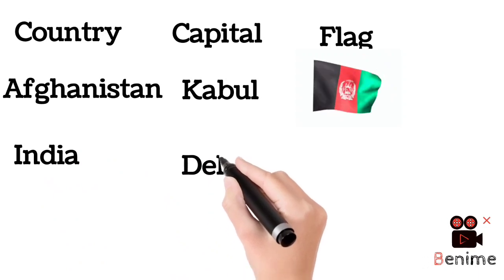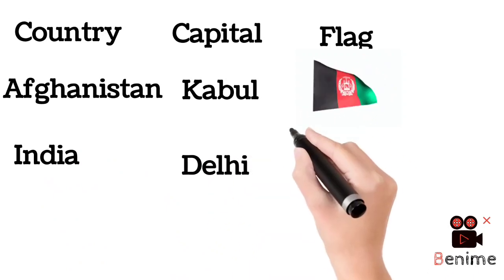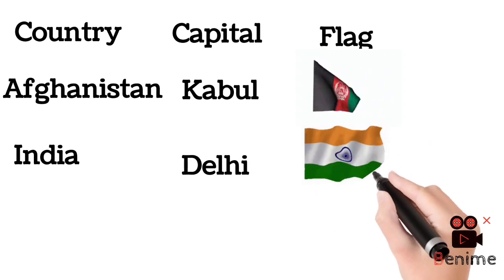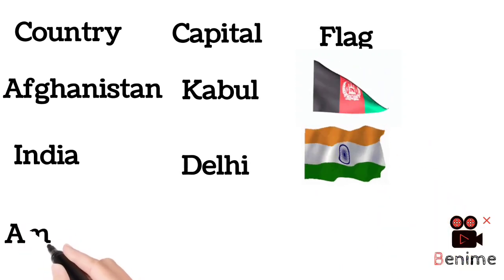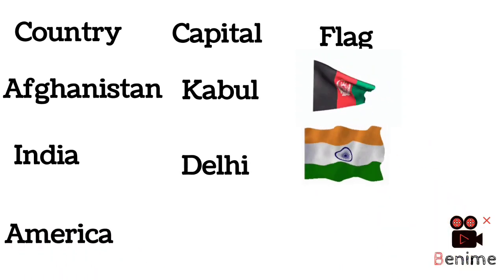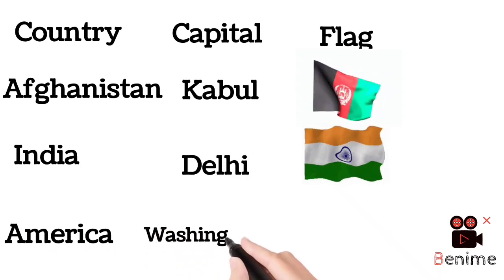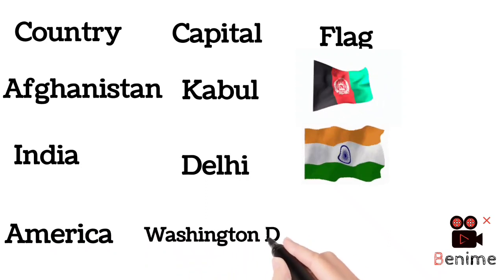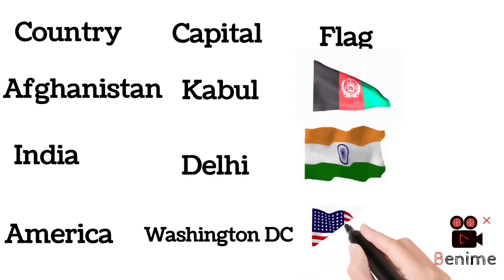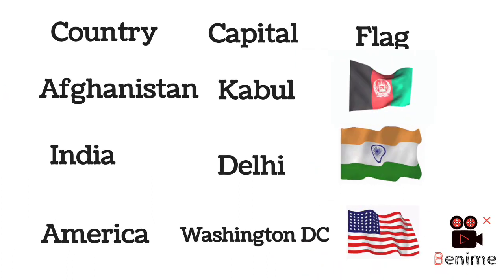Country name is India, capital is Delhi, and this is the flag of India. Country name is America, capital is Washington DC, and this is the flag of America.